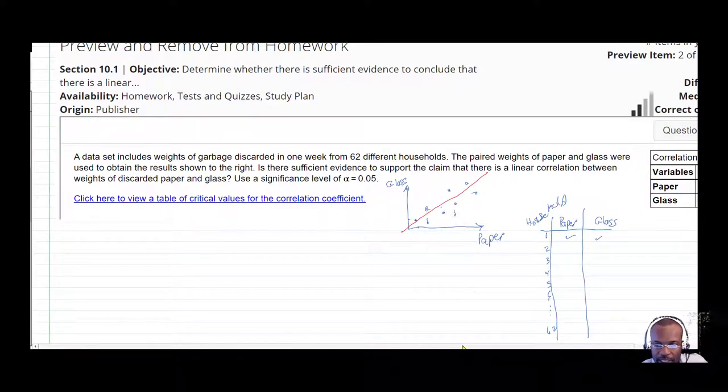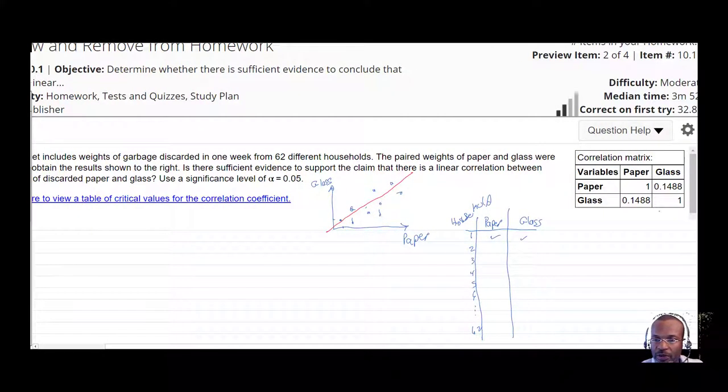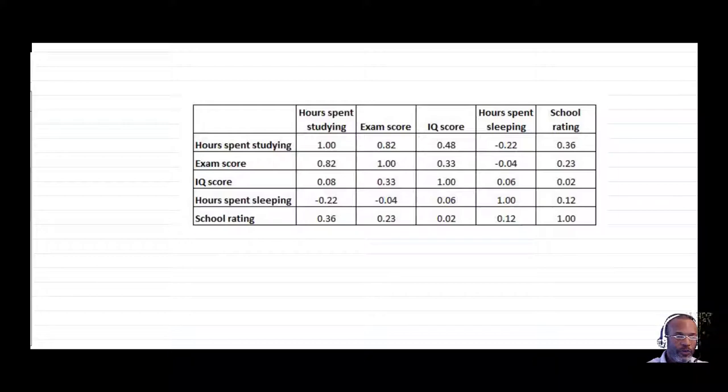Now, what they've done is we have the correlation coefficient given to us, but it's given to us in this correlation matrix. So a correlation matrix is more commonly used when you're dealing with multiple variables.